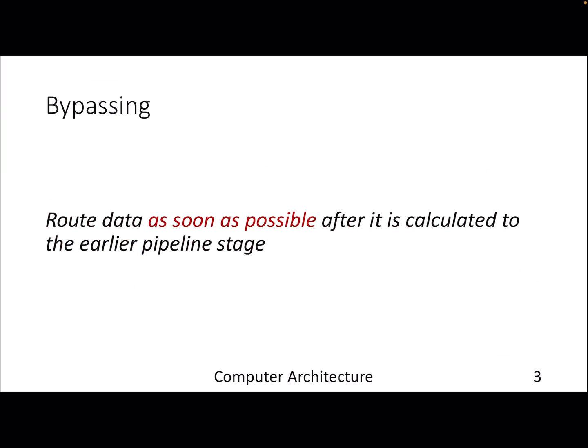Instead, we will now come up with better solutions for mitigating hazards and improving our instruction throughput. The first technique is known as bypassing, also known as forwarding. The idea is simple and intuitive: whenever you get the data, route it to the needy instruction as soon as possible. 'As soon as possible' is the key.